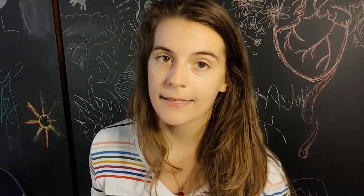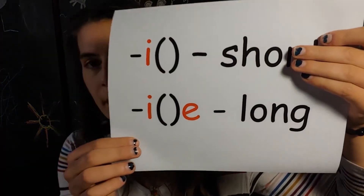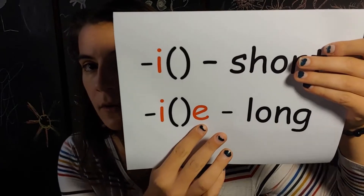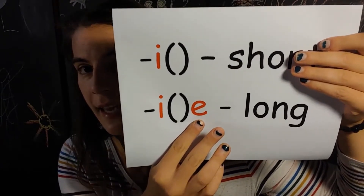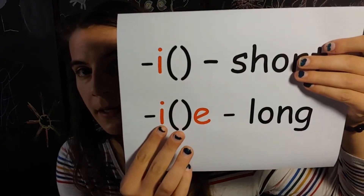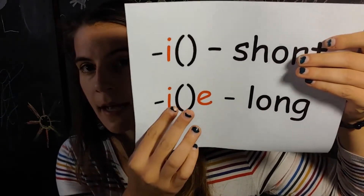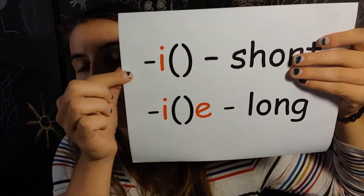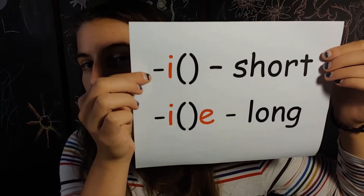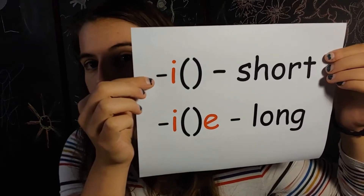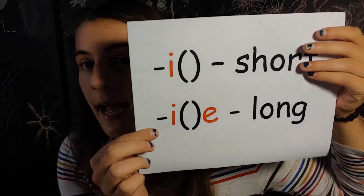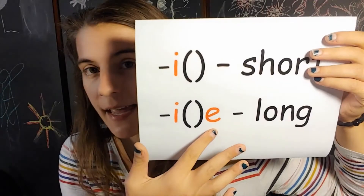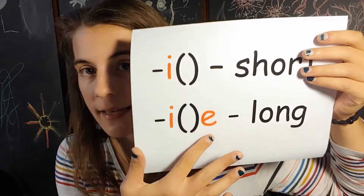However, the long I sound — I — in keeping with the pattern, you'll recognize when to use it when the I is with another vowel in the word, usually the letter E at the end. So it'll typically be an I in the middle, then some consonants, and then an E at the end. If the I is alone with no other vowels, it's the short I sound. But if you see a vowel especially at the end, that's how you know it will be the long I sound.